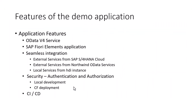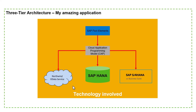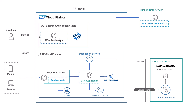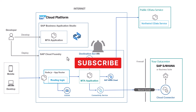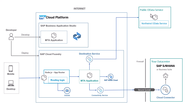We looked at the three-tier architecture that we are going to be building. We will be developing the application in the Business Application Studio IDE — this is the recommended IDE, but you are free to use a local version of Visual Studio Code or any other IDE. Once you develop your application, you can deploy it to SAP Cloud Foundry and use various services in SAP BTP to connect to publicly available services and also to your on-premise system. But for now, we will only be focusing on developing and testing the application locally within Business Application Studio. SAP Cloud Foundry is not in the picture at this moment.